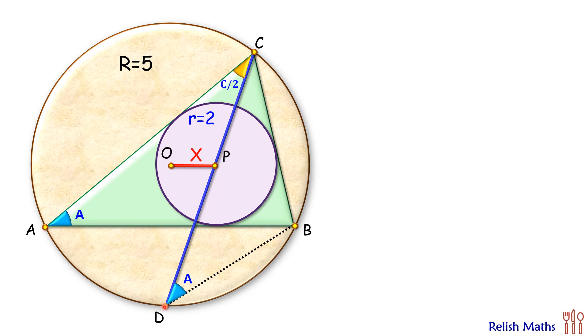Now if you look at the chord AD, AD is sustaining an angle of C by 2 on the circumference, and thus it will sustain angle C by 2 on the remaining part of the circle also. So this angle here is C by 2.